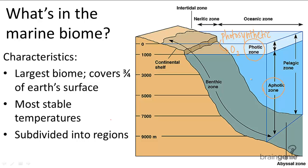The aphotic zone doesn't have a lot of nutrients, so it depends on nutrients from the photic zone to sink down into it — that's how it gets many of its nutrients. The reason why it doesn't have a lot of nutrients is because there are no plants in the aphotic zone.